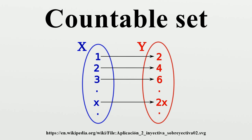It might seem natural to divide sets into different classes: put all sets containing one element together, all sets containing two elements together, and finally put together all infinite sets and consider them as having the same size. This view is not tenable, however, under the natural definition of size. To elaborate, we need the concept of a bijection. Although a bijection seems a more advanced concept than a number, the usual development of mathematics in terms of set theory defines functions before numbers, as they are based on much simpler sets.